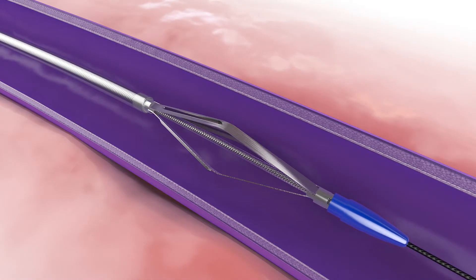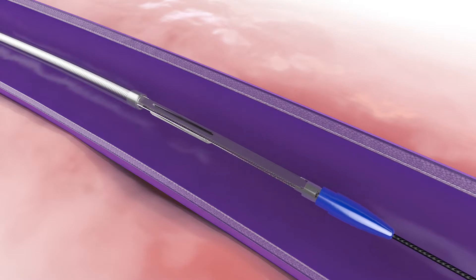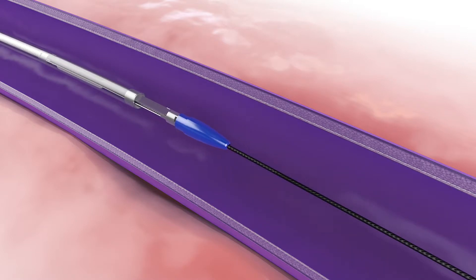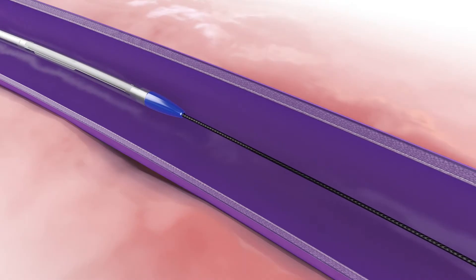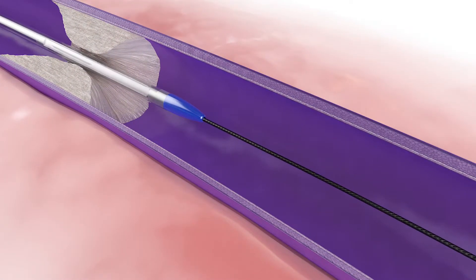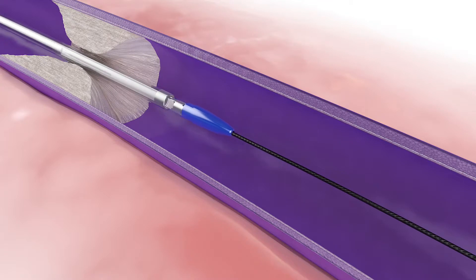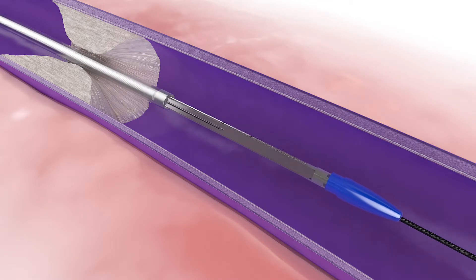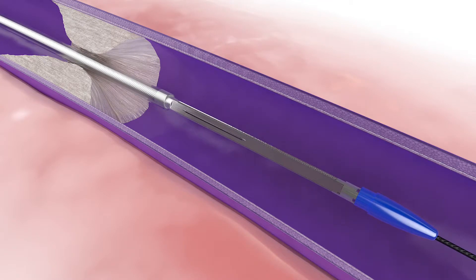Deactivate and resheath Flex and advance back through the treatment area. Rotate Flex 30 to 90 degrees per operator's preference. Unsheath, with the vessel prep element expanded, perform a second pullback.